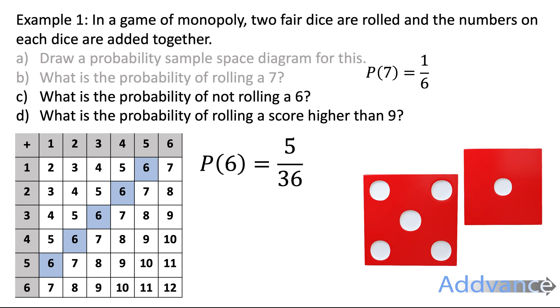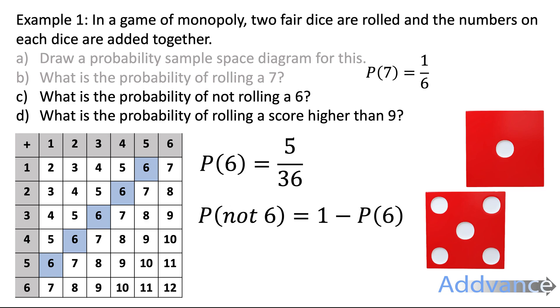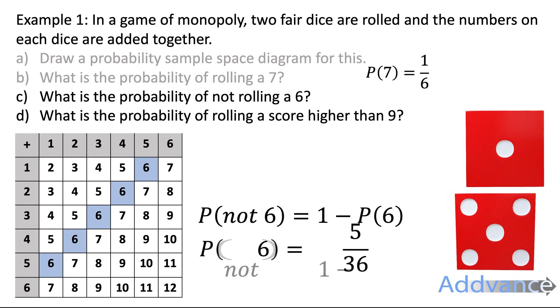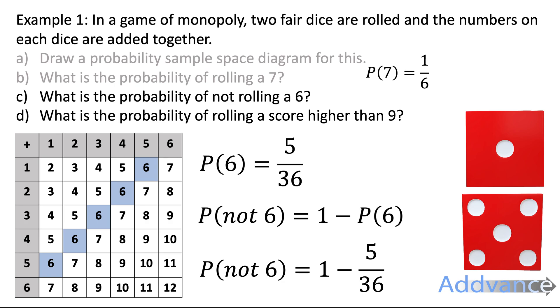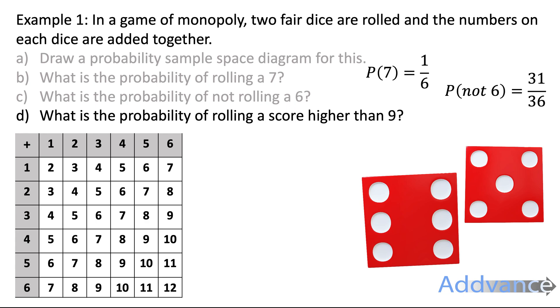Because there's 5 ways of it happening out of 36 possible ways. The probability of it not being a 6 is 1 minus the probability of it being a 6, which is 1 minus 5 out of 36. 1 minus 5 out of 36 is 31 out of 36. And that is the final answer. The probability of not a 6 is 31 out of 36.